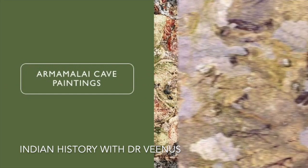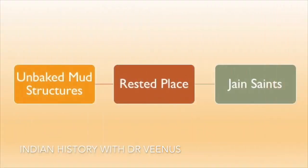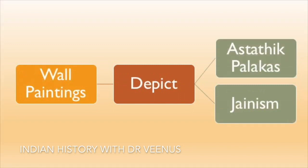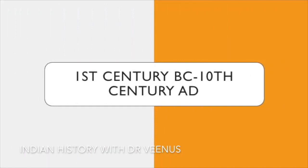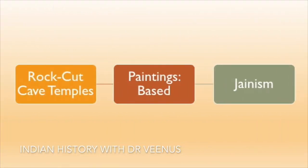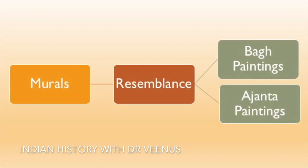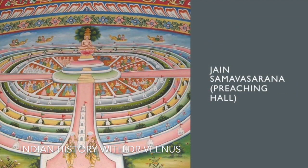Armamalai Cave Paintings, situated in Vellore district of Tamil Nadu, are natural caves converted into a Jain temple in the 8th century. Unbaked mud structures within acted as resting places for Jain saints. The colorful paintings on walls and roof depict the tales of Ashtashtika Palakas — deities protecting eight corners — and Jainism. Sittanivasal Cave (or Arivarkoel), dated from 1st century BC to 10th century AD in Tamil Nadu, are famous rock-cut cave temples with paintings based on Jainism. These murals closely resemble Bagh and Ajanta paintings and appear on walls, ceilings and pillars, with the theme of the Jain Samavsharan Preaching Hall.